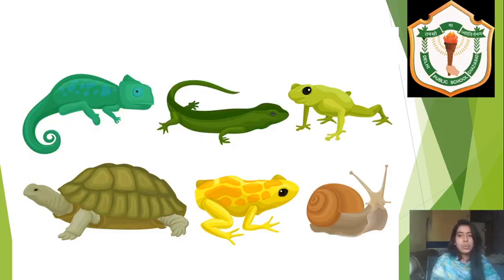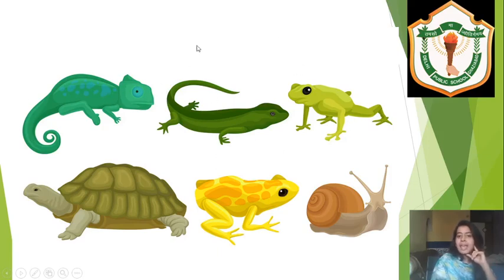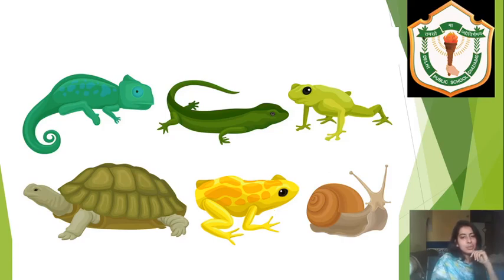Cold-blooded animals have several ways to soak heat from the outside environment, but the problem is they are entirely dependent on the outside environment to maintain their body temperature — they cannot regulate it themselves. All cold-blooded animals fall into the categories of reptiles, amphibians like frogs, insects like snails, and fish.